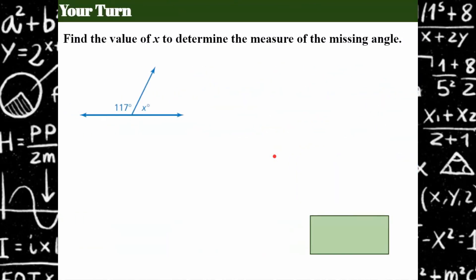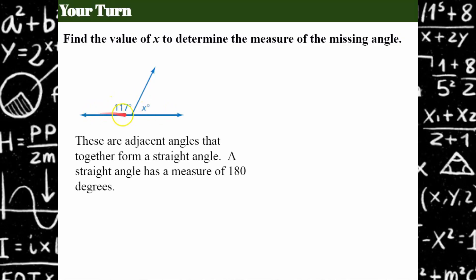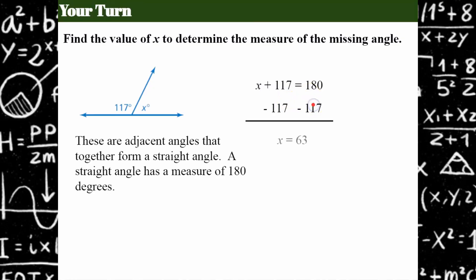Your turn — please pause and come back when you're ready. Welcome back. This one was different — this is a straight angle. If you need review on right angles and straight angles, my previous video will cover that. These are adjacent angles that form a straight angle measuring 180 degrees when added together. So we write: x + 117 = 180. Subtract 117 from both sides and x = 63. So 63 degrees is the missing angle.